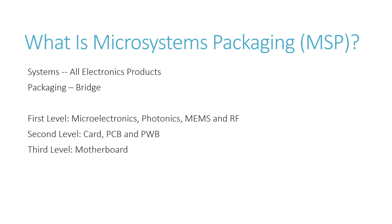Microsystems packaging involves three levels. The first one is at the IC or device level. It involves interconnecting, powering, cooling, and protecting ICs. At this level, typically referred to as level 1, the packaging acts as an IC carrier, also called a packaged IC. However, packaging a single IC does not generally lead to a complete system, since a typical system requires a number of different active and passive devices.